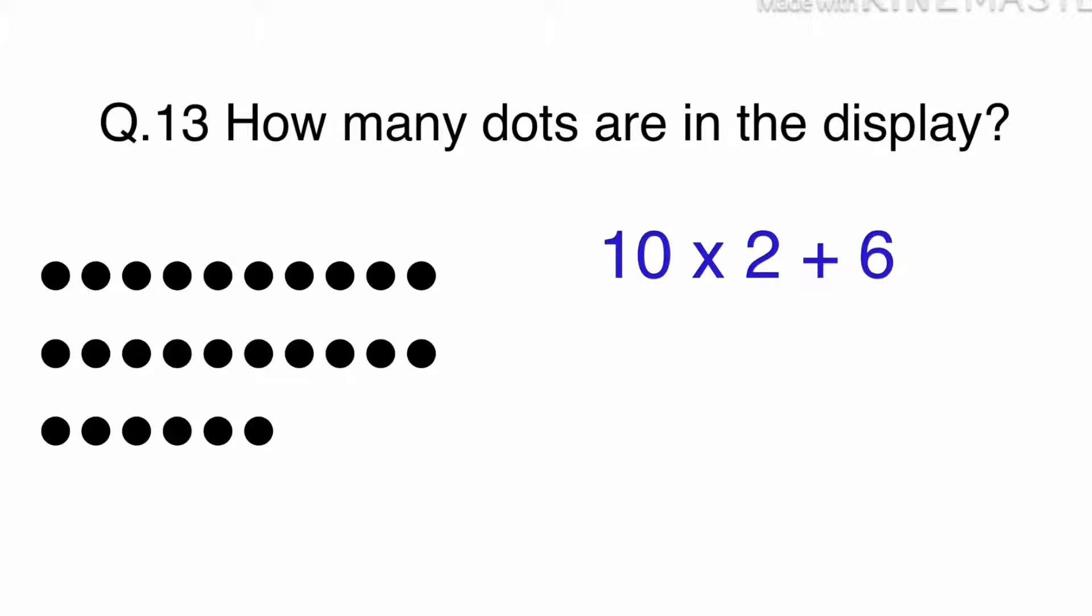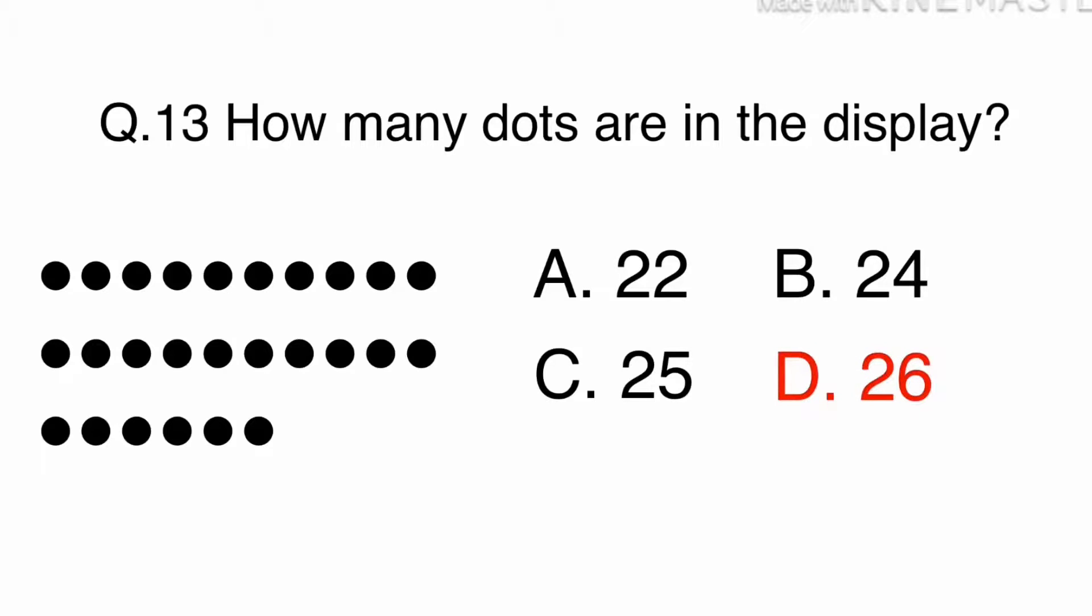In the first two rows, there are 10 in each, and then there are 6 in the last row. Then, simply add 20 and 6 together to get 26. The answer is D. 26.